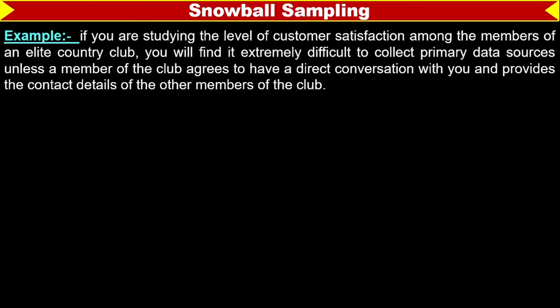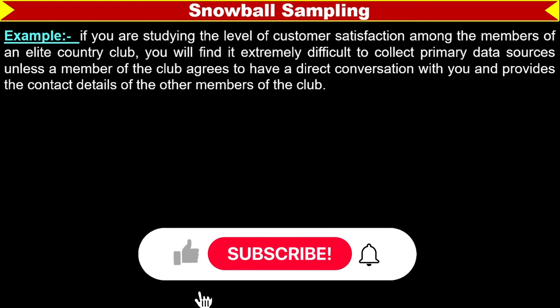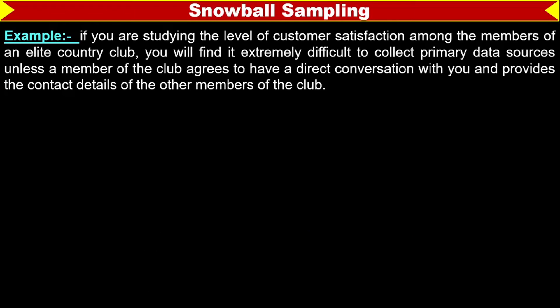For example, if you are studying the level of customer satisfaction among the members of an allied country club, you will find it extremely difficult to collect primary data sources unless a member of the club agrees to have a direct conversation with you and provides you the contact details of other members of the club.